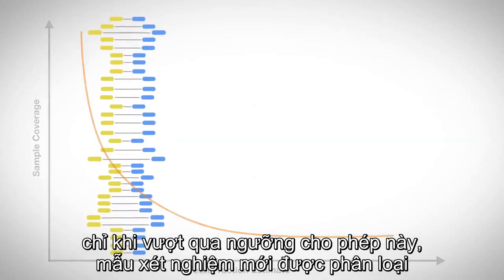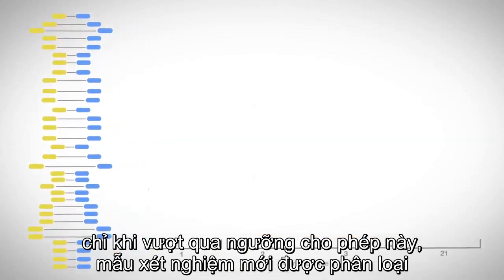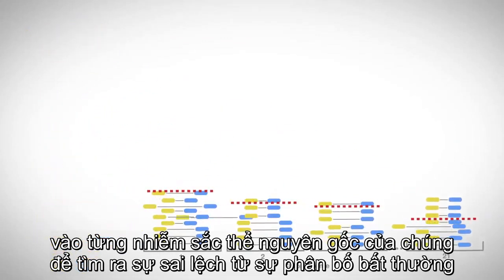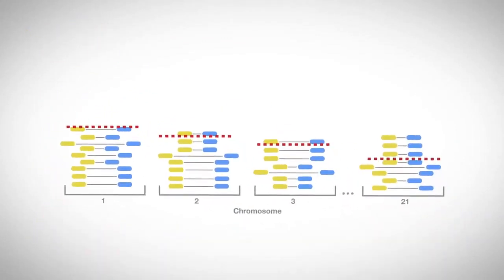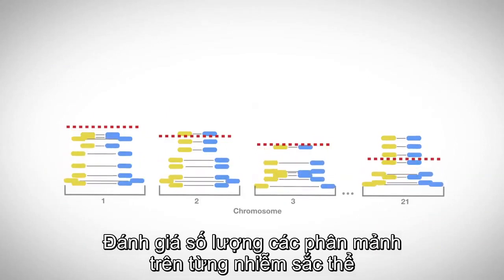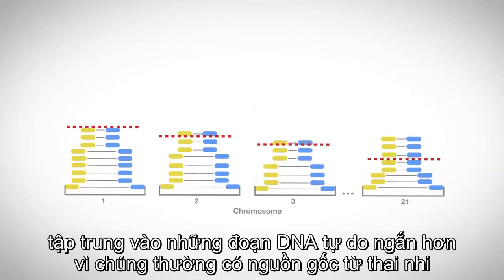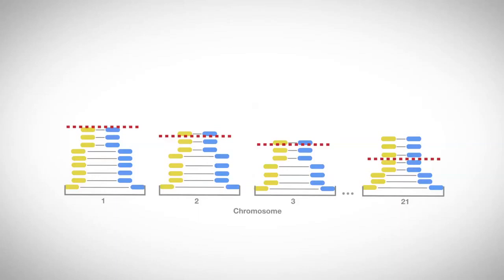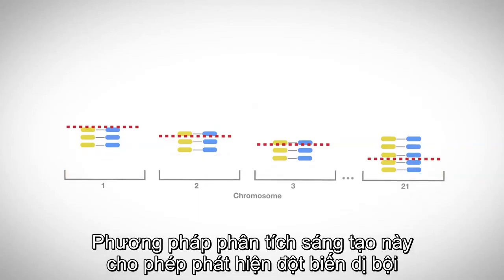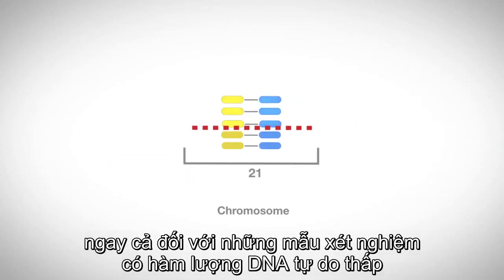Once samples pass this threshold, reads are sorted by chromosomes to look for deviations from the expected distribution. In addition to focusing on all reads, the solution refines the assessment by looking at shorter cell-free DNA fragments that are known to be enriched with fetal signals. This innovative analysis methodology allows aneuploidy to be detected in more samples, including those with low fetal fraction.